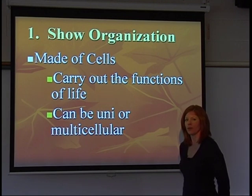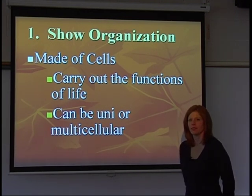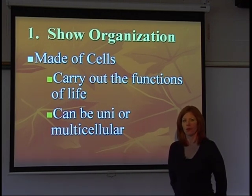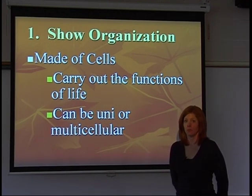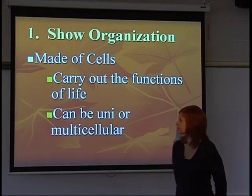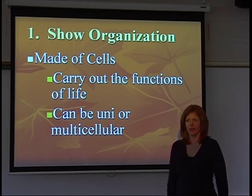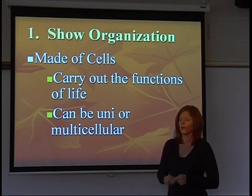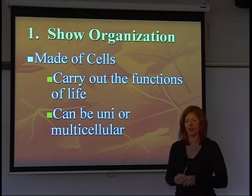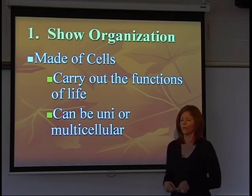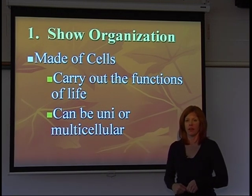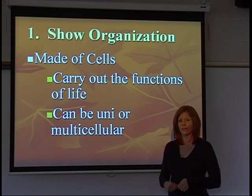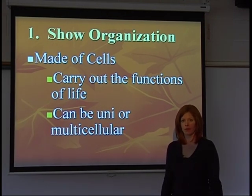The first characteristic of living things is that all living things show organization, which means that they are made out of cells. Cells are the basic units of all life, so in order for something to be living it must be made out of cells. There are two different types of organisms: unicellular, meaning made out of one cell, and multicellular, meaning made out of many cells. Humans are an example of multicellular organisms because there are billions of cells in our body working together.